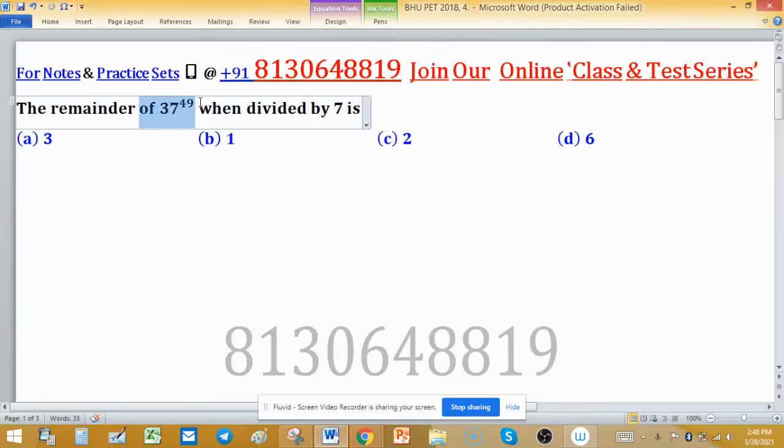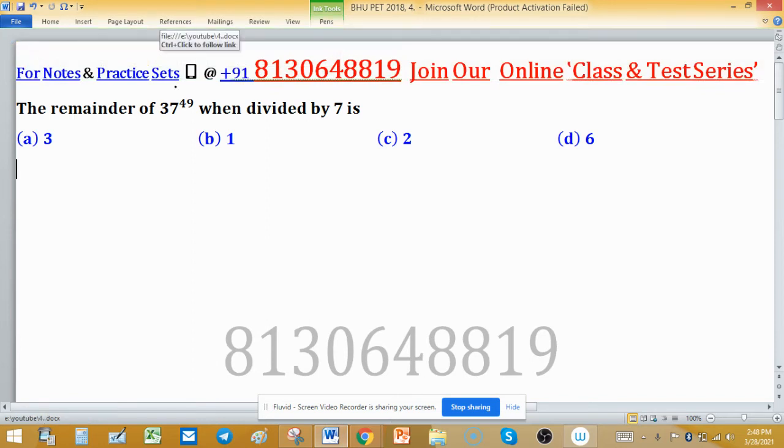The remainder of 37 raised to the power 49 when divided by 7 is - so find the remainder here. Congruence will help us to find the remainder. So what is congruence? If I write a mod n, it means that when I divide a by n, the remainder left is the value of a mod n.